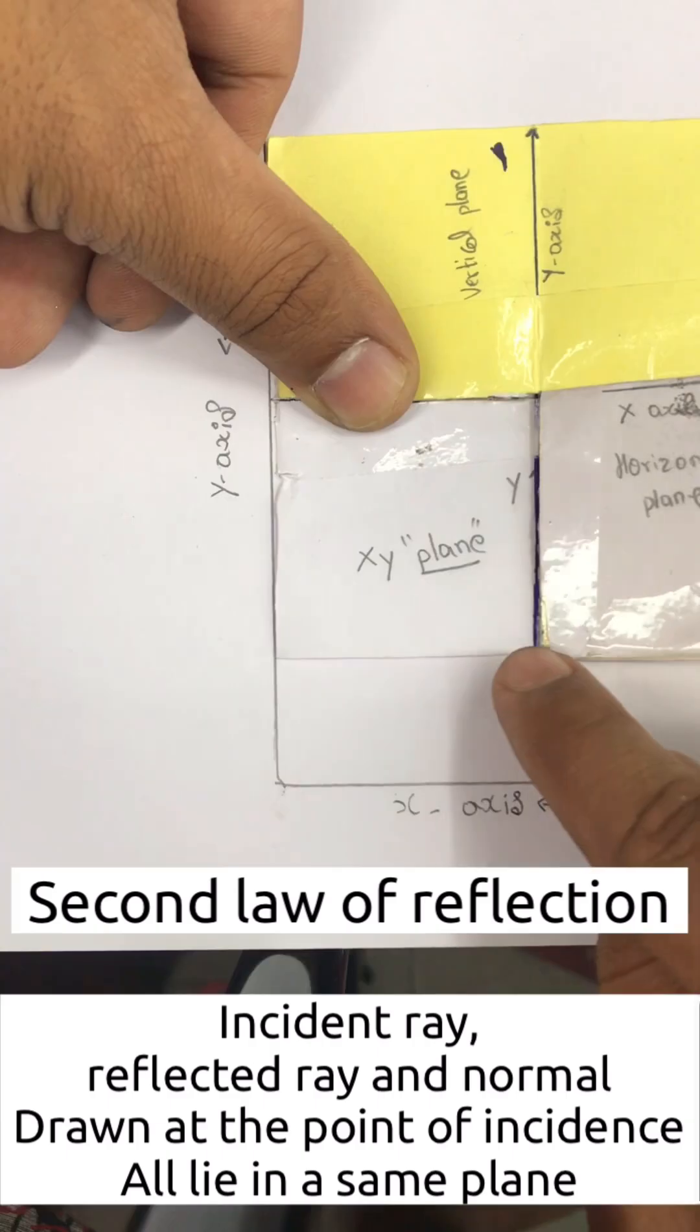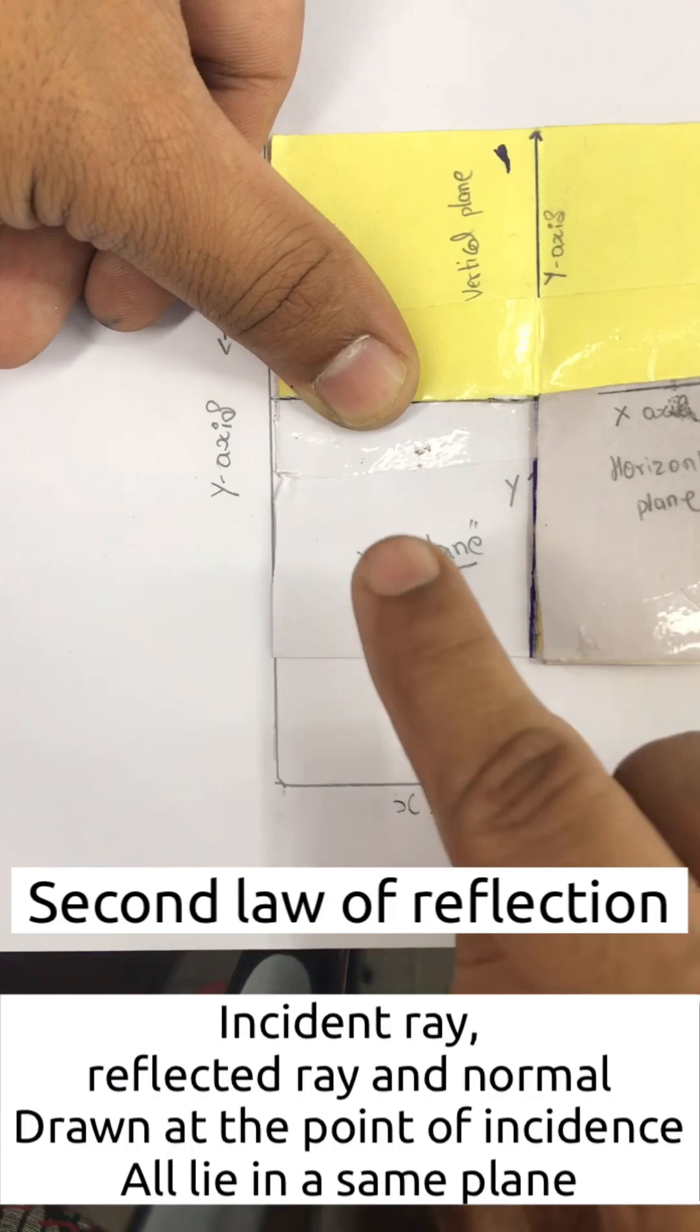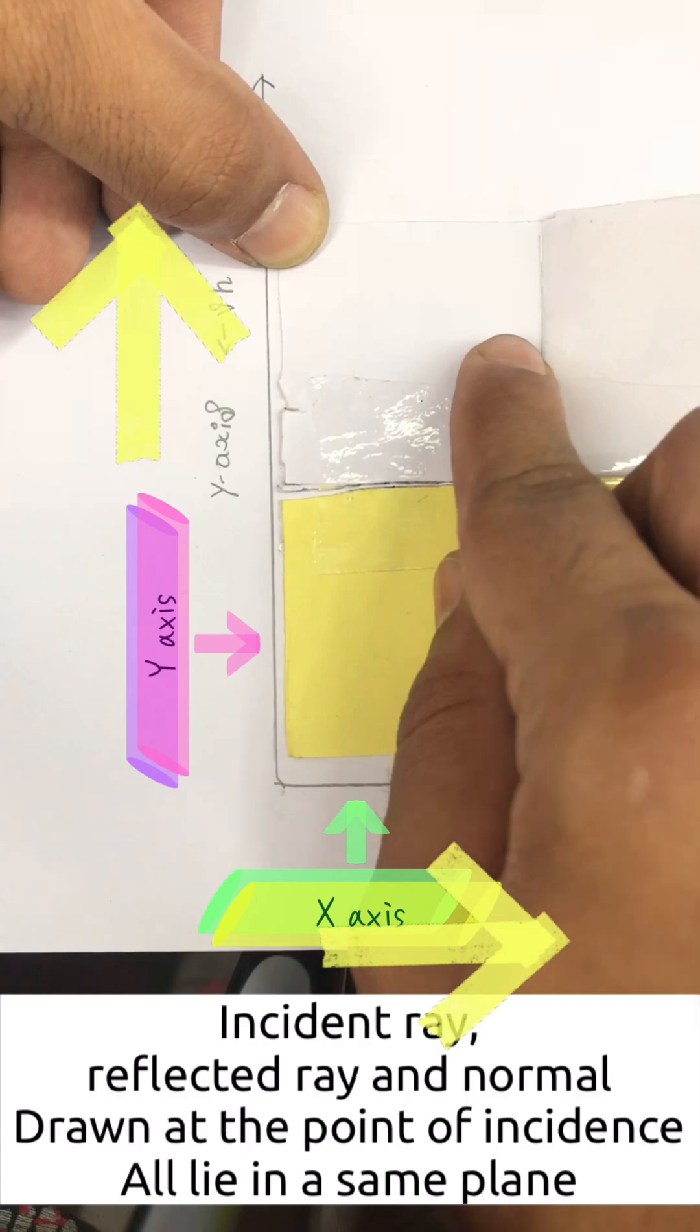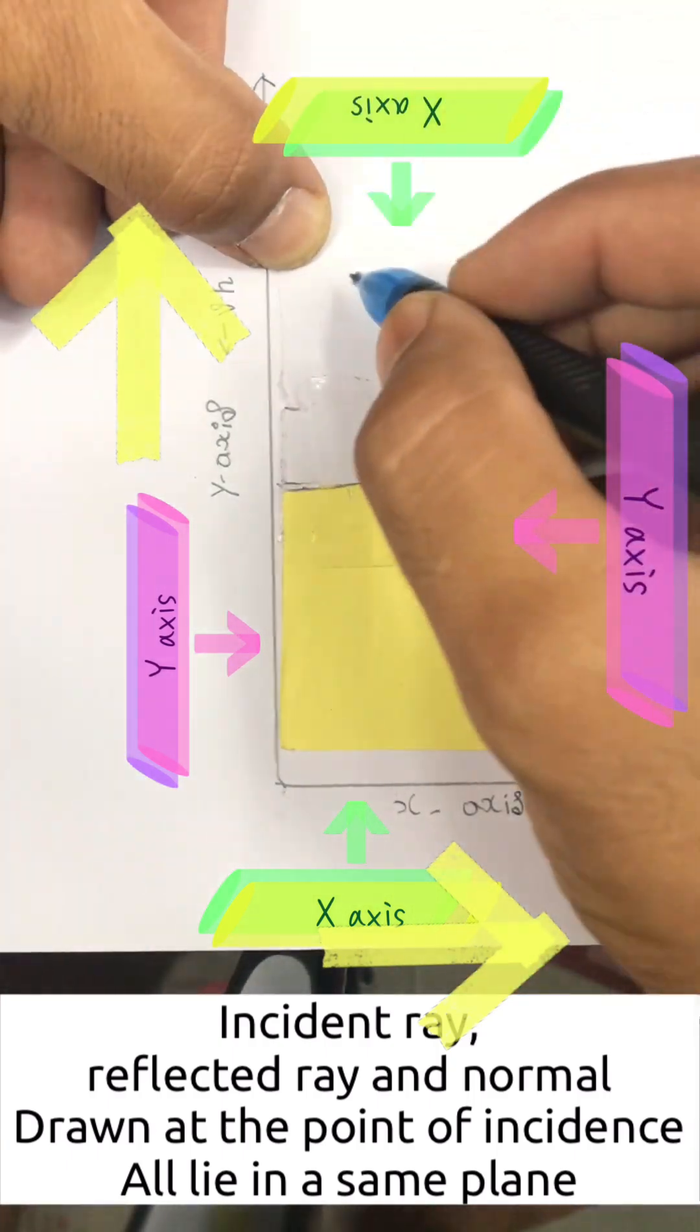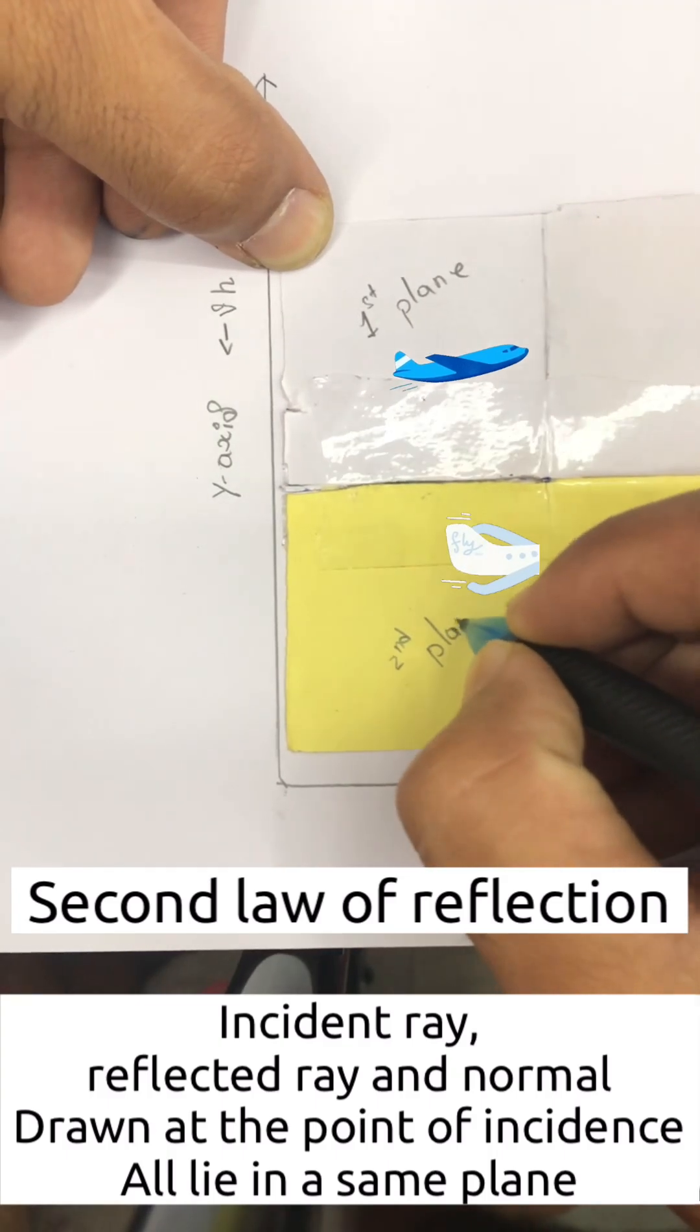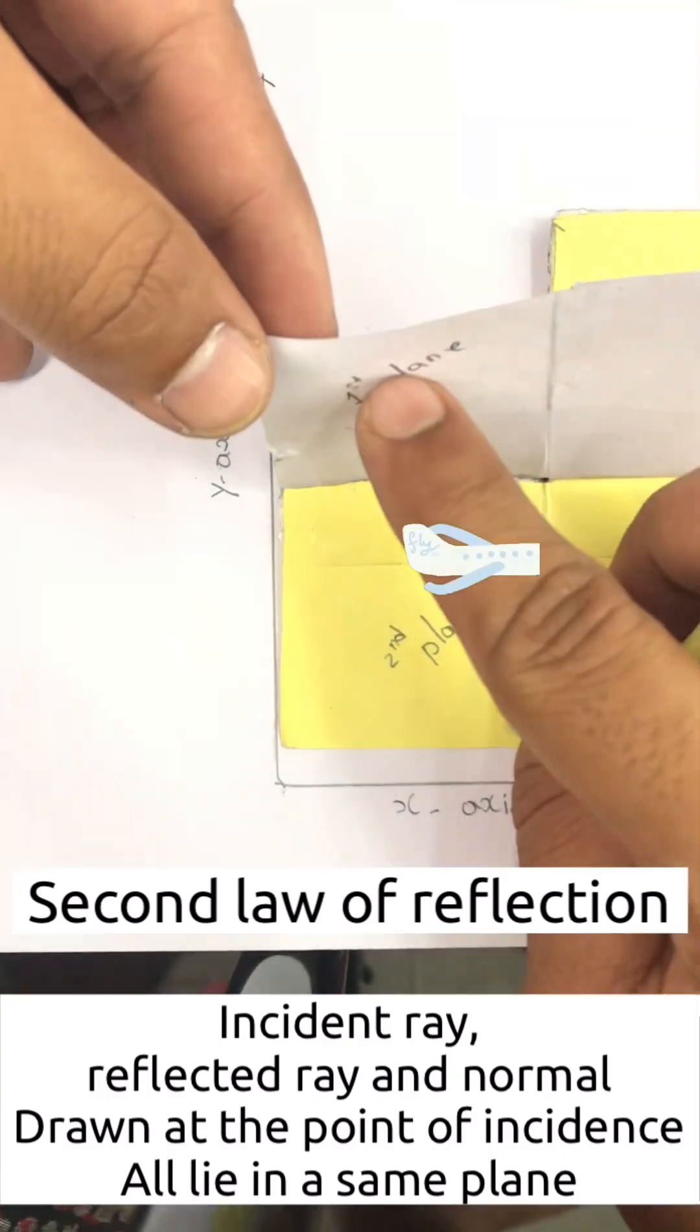Then let us understand the plane. As you can see, I have attached the yellow sheet on top of the white one. The yellow sheet has its own x and y axis, so does the white one. The x and y axis forms a plane. Therefore, our first plane is the white paper and the second plane is the yellow sheet.